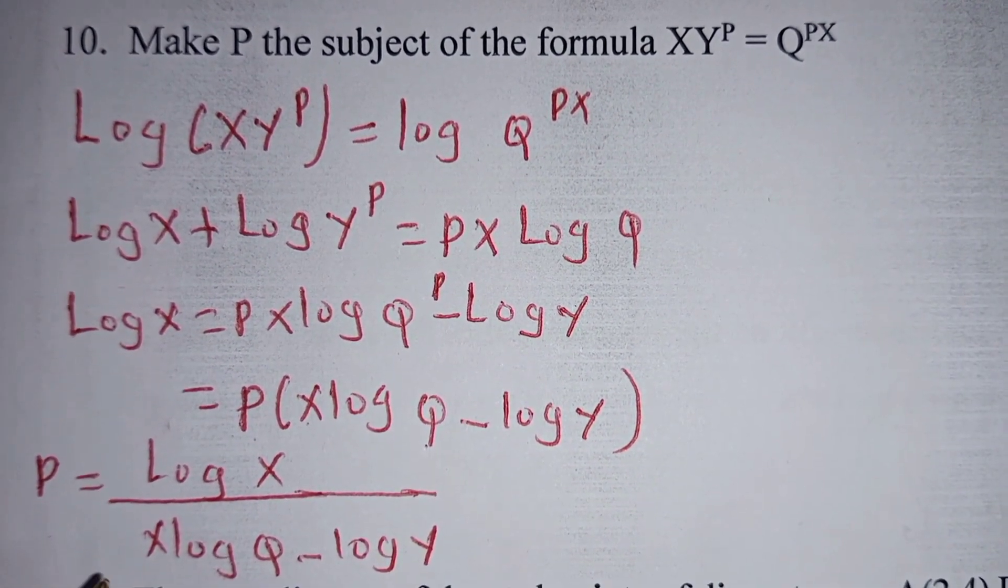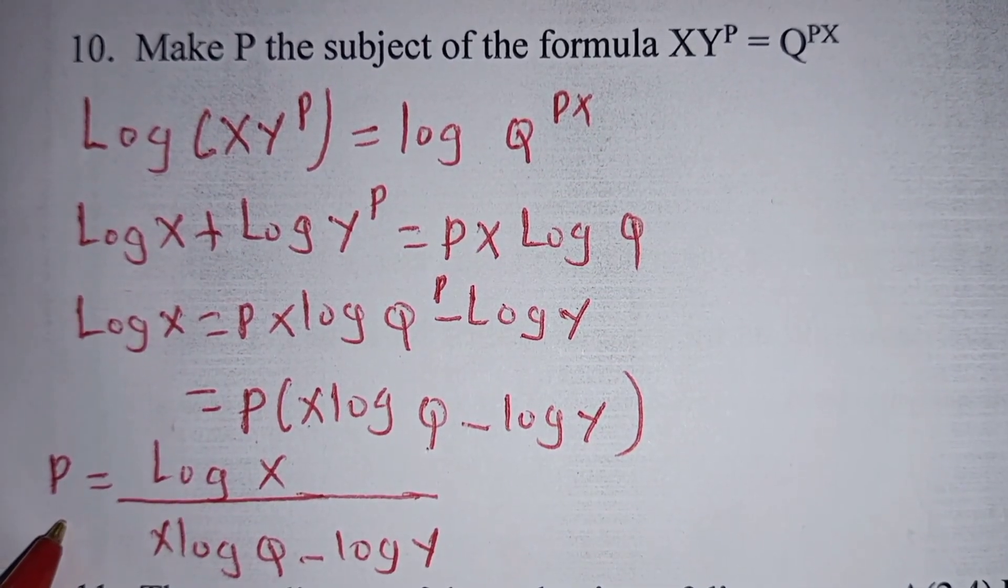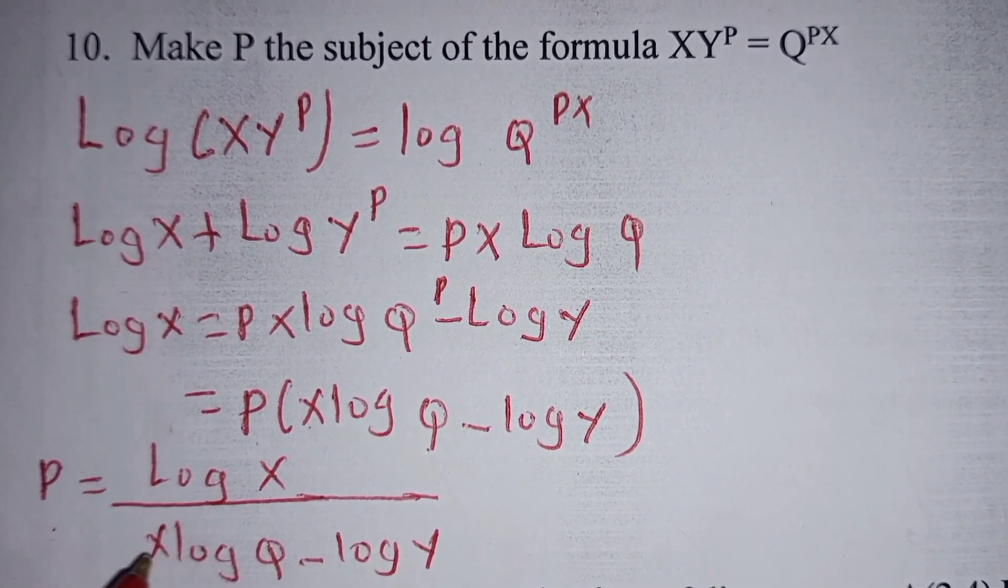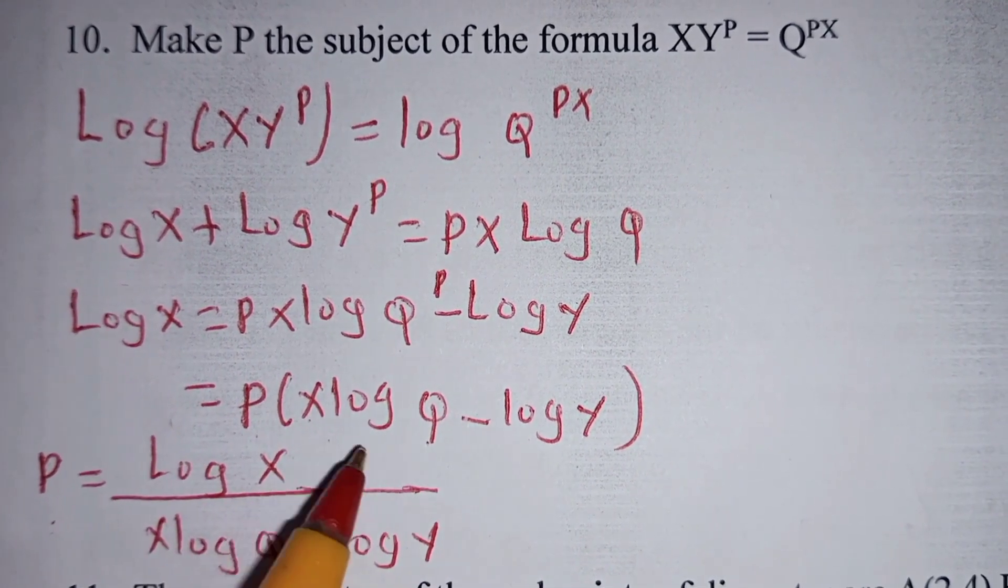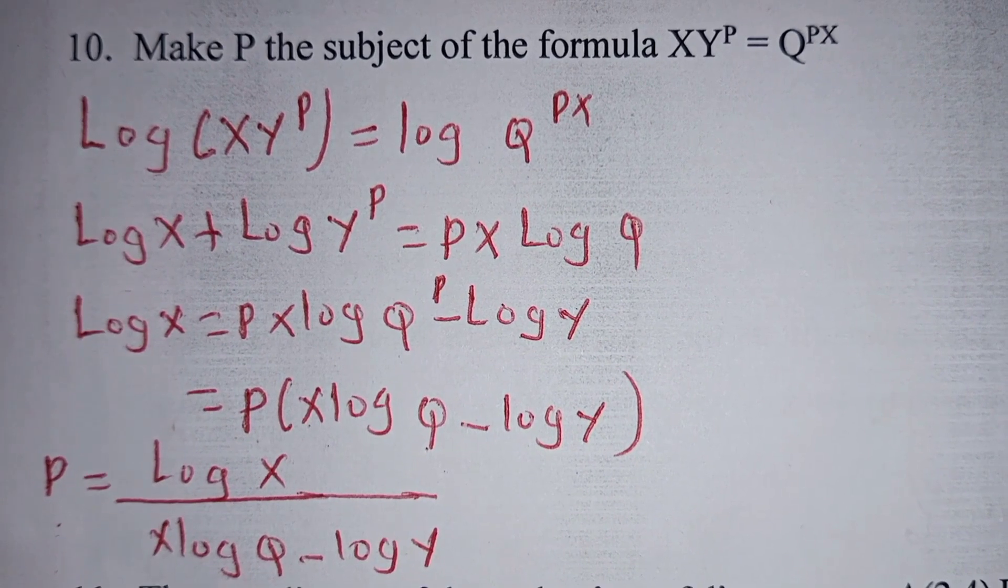Then from there now, because you want to make P the subject, you divide both sides by X log of Q minus log of Y. Whereby now P will be this value.